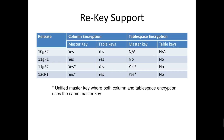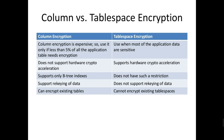In 12c R2, there is a unified master key where both column and tablespace encryption use the same master key. Column versus tablespace encryption: column encryption is expensive — use it only if less than 5% of application tables need encryption. Tablespace encryption is used when most of the application data are sensitive. Column encryption does not support hardware crypto accelerations; tablespace encryption does. Column encryption supports only B-tree indexes; tablespace encryption has no such restriction. Column encryption supports rekeying of data; tablespace encryption does not. Column level encryption can encrypt existing tables; tablespace level encryption cannot encrypt existing tablespaces.